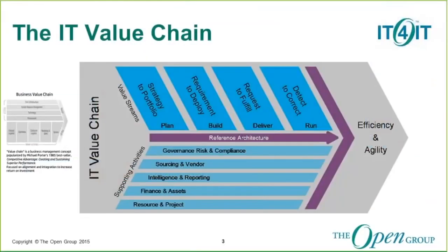This diagram shows the IT value chain as part of the IT for IT reference architecture. It describes the operating model for the business of IT and is characterized by taking a more holistic approach to IT management. It provides the bigger picture of how IT is delivering value to the business. Using a value chain approach, IT for IT offers a blueprint for managing IT services across the entire service lifecycle, and shows how the architectural components are all interrelated. The IT for IT standard enables the IT function to deliver services in a better, faster, cheaper way with less risk.